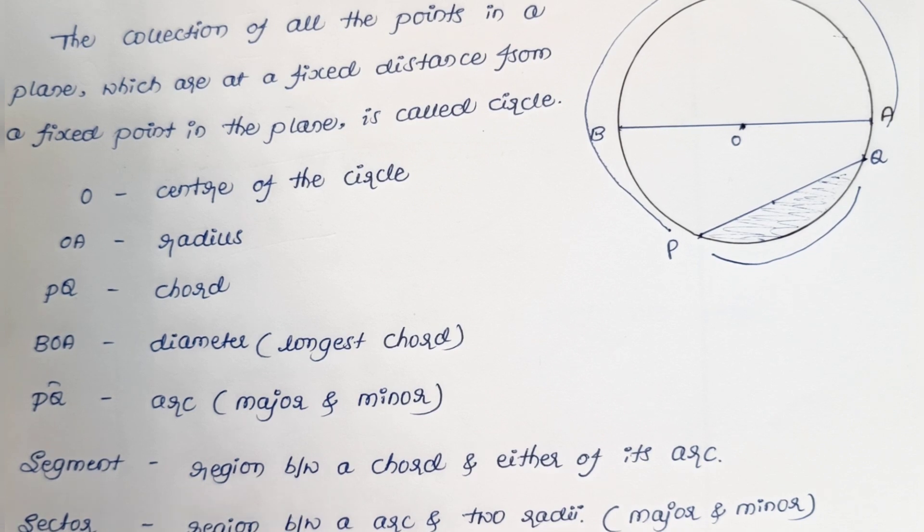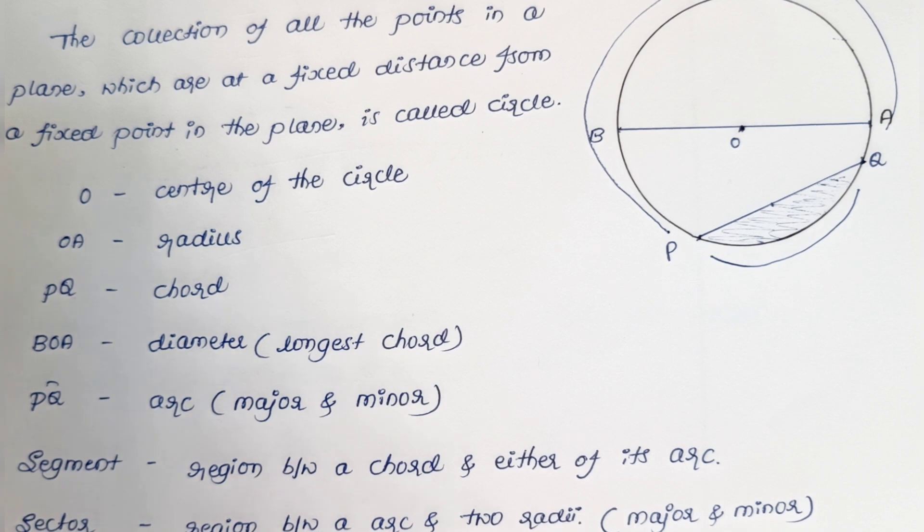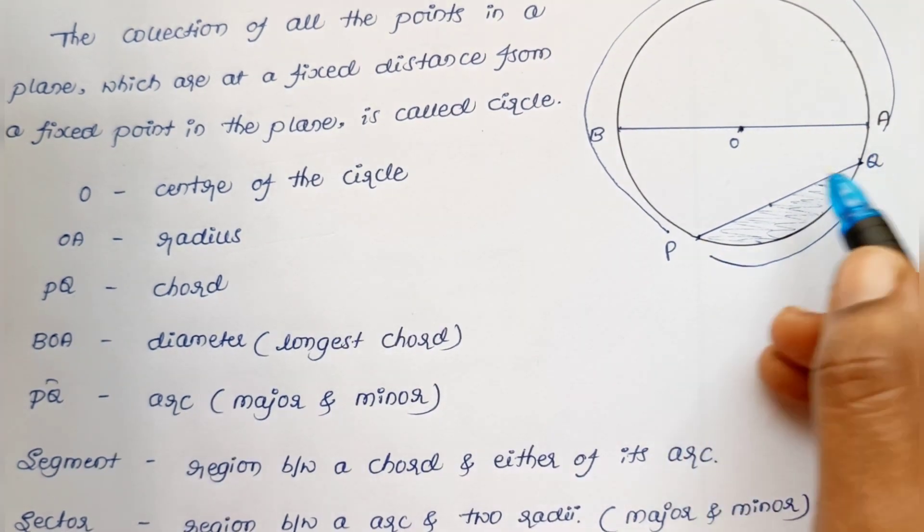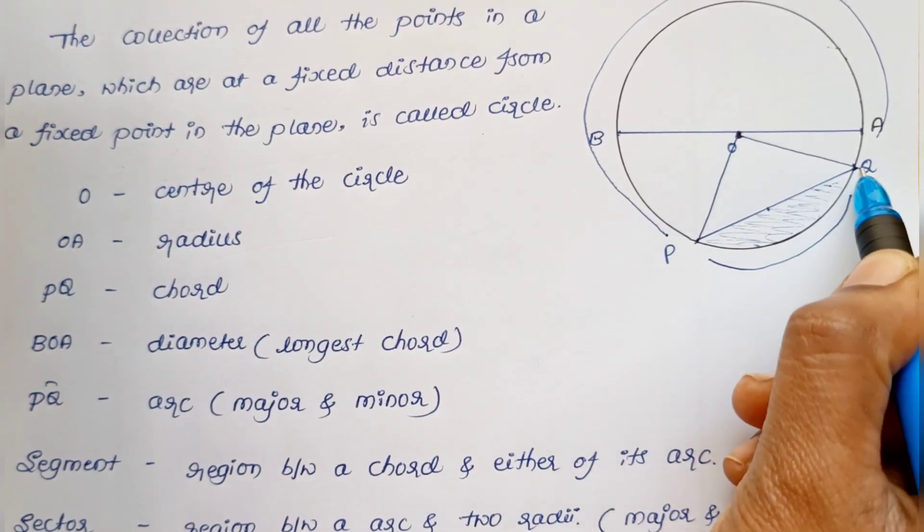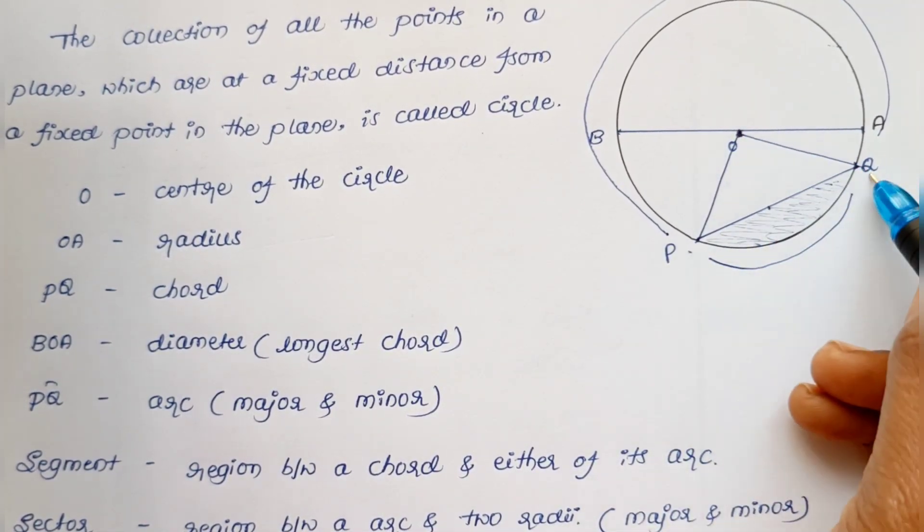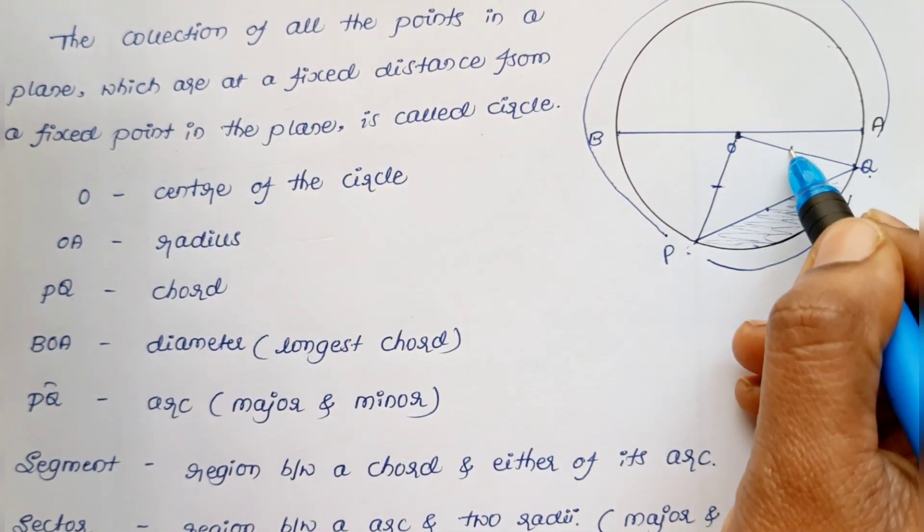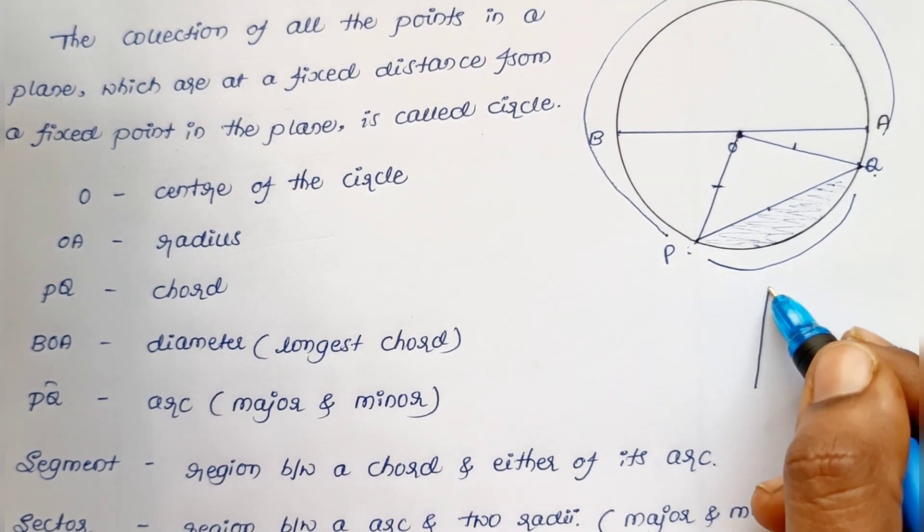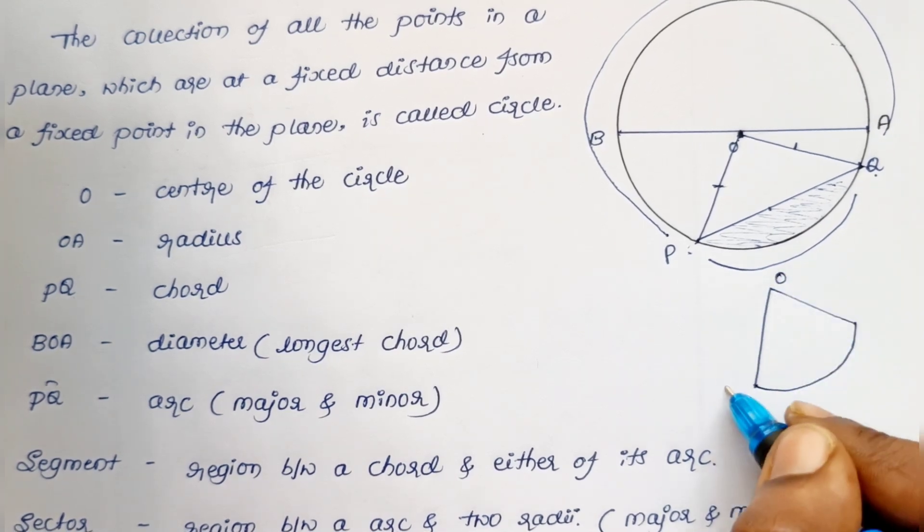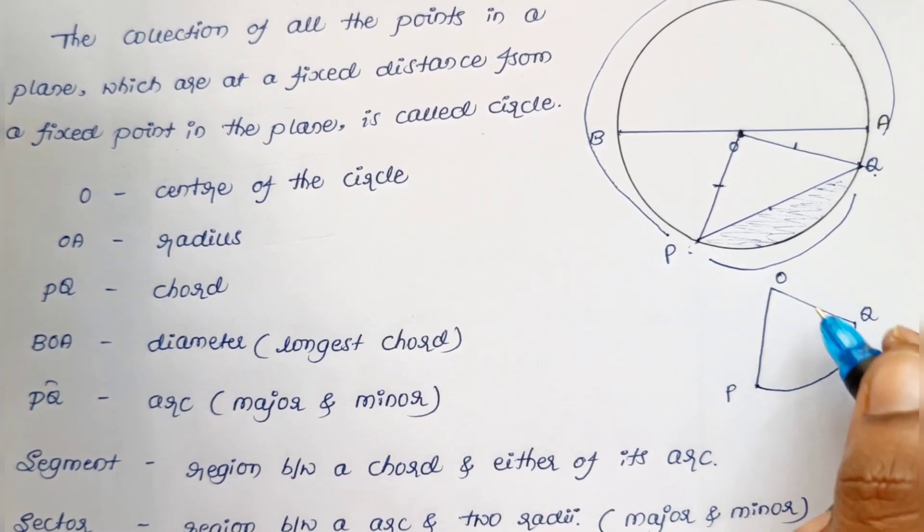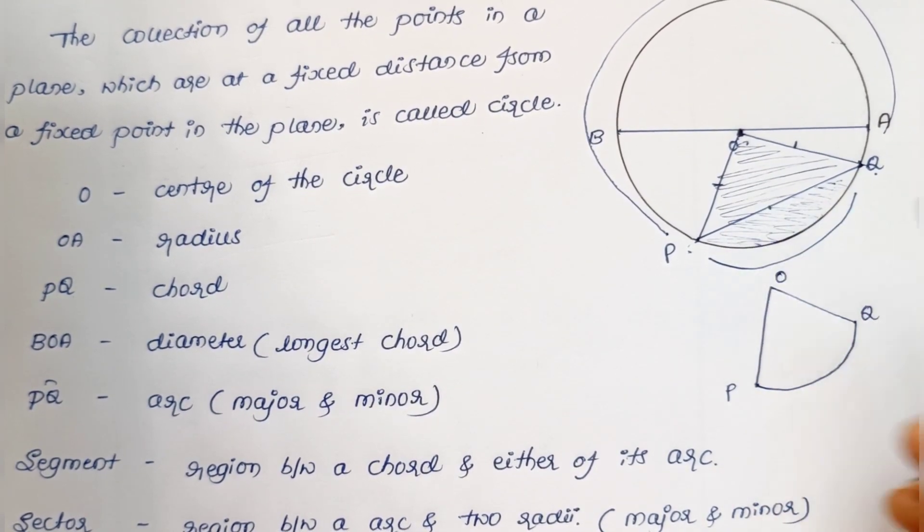Next one is sector, the region between an arc and two radii. So PQ here is an arc. OP is one radius and OQ is another radius. This whole region O, P, Q is called a sector.